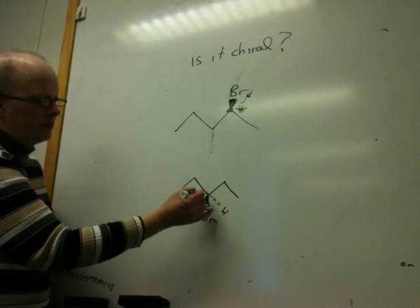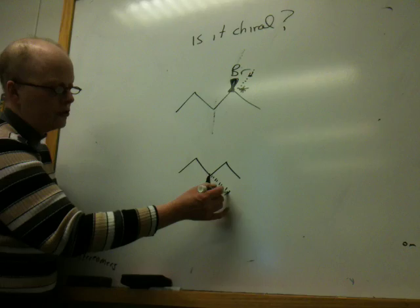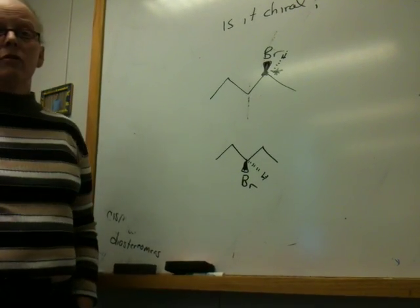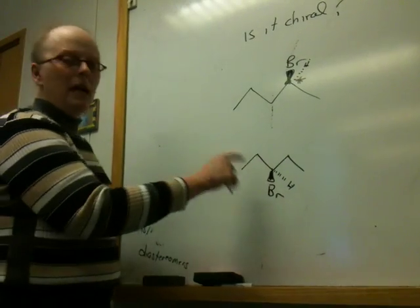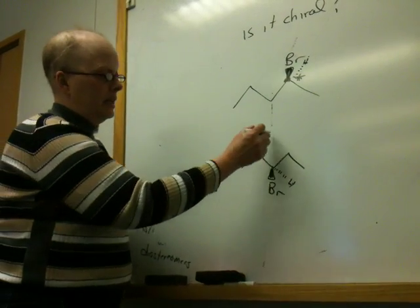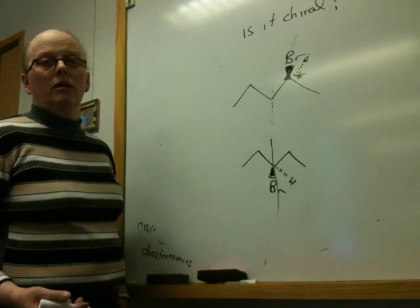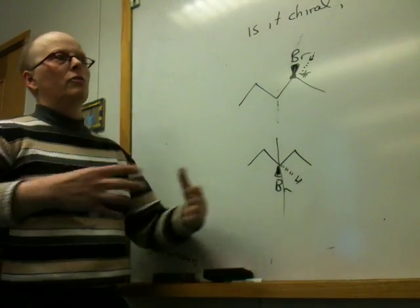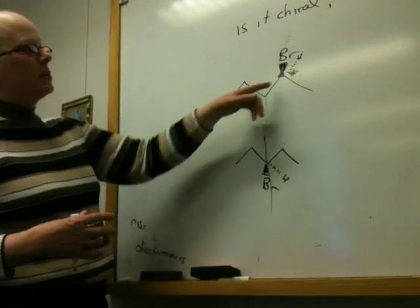When we go down here, this carbon has a hydrogen, a bromine, and two ethyls. Is it chiral? Realize there are lots of molecules that are not chiral. This molecule is not chiral. It has a plane of symmetry. It's symmetrical. Chiral molecules are so asymmetric that they're non-superimposable on their mirror image.